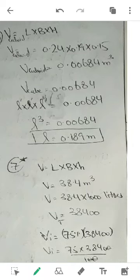First I will find the volume of the cuboid, length into breadth into height, and these three dimensions are given to me. So this is the total volume 0.00684 meter cube. Why cuboid? Because block is actually showing the shape of a cuboid.